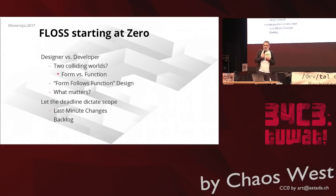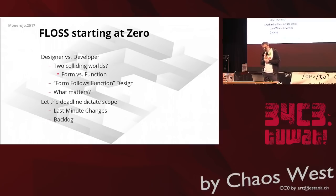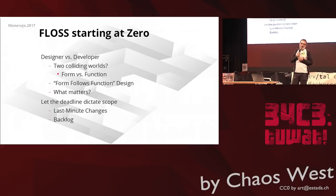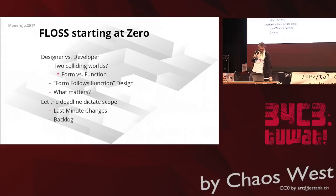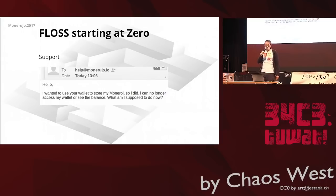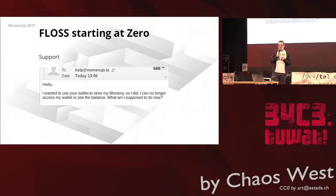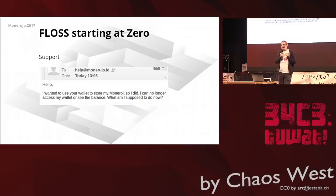It's important to see what matters for the whole team and for this project. Let the deadline dictate the scope — if we've got a deadline in one week, there's no point in putting a month of work into it. Put the rest in the backlog. Things disappear from the backlog mysteriously because it turns out they weren't important in the first place. Then there's the support issue — I got a message a couple of days ago: 'I wanted to use your wallet to store my Monero. I can no longer access my wallet or see the balance. What am I supposed to do?' You need to deal with these kind of support things in a cordial manner.